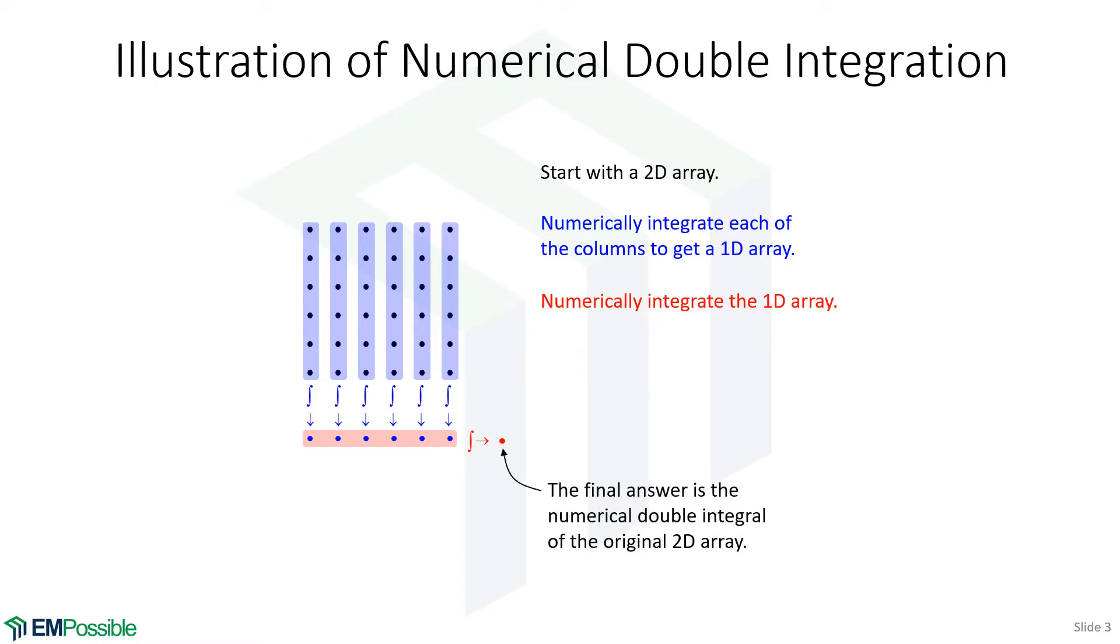We can then come along and do a numerical integration this way and get a final single number. So that final single number, that's the answer to our double integral. And we can use different integration types, and that's very common. For example, this might be a difficult integration, so we use a rather sophisticated technique. This might be simple, and we do a simple discrete integration.